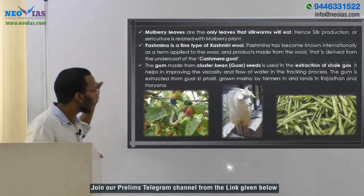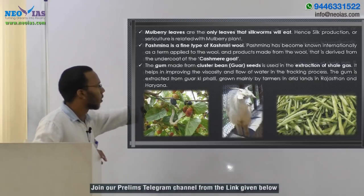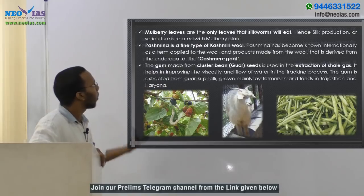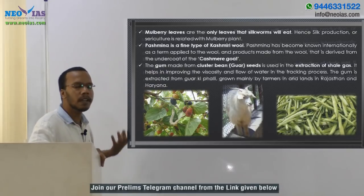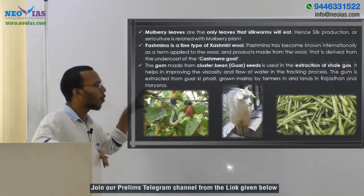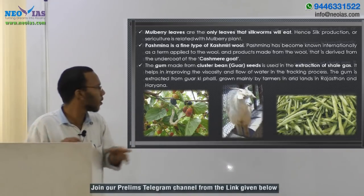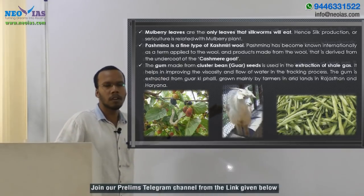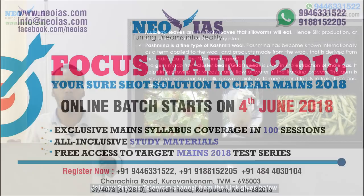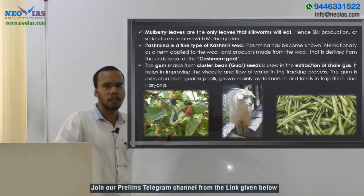Silk is produced from the cocoon, so mulberry plant and silk have a relation. You can see this is the Pashmina goat, also called the Kashmiri goat. It is a breed of goat found mainly in the Kashmir region, and from the fur of this Kashmiri goat we produce the shawl known as the Pashmina shawl.